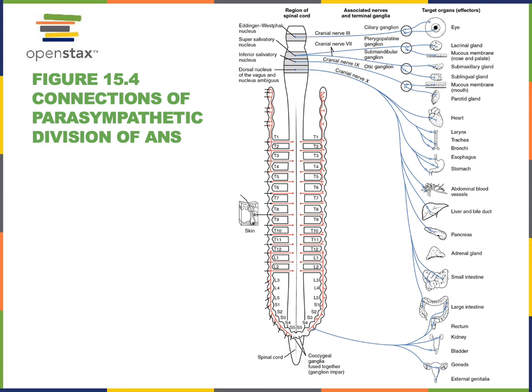Cranial nerve seven, the facial nerve, carries preganglionic fibers that travel to the pterygopalatine ganglion and submandibular ganglion. Postganglionic fibers travel from the pterygopalatine ganglion to the lacrimal gland and mucus membranes of the nasal and oral cavity, where the parasympathetic nervous system stimulates secretion of tears and mucus. Cranial nerve nine, the glossopharyngeal nerve, contains preganglionic parasympathetic fibers that travel to the otic ganglion, and then postganglionic fibers travel from the otic ganglion to the salivary glands to stimulate secretion of saliva.